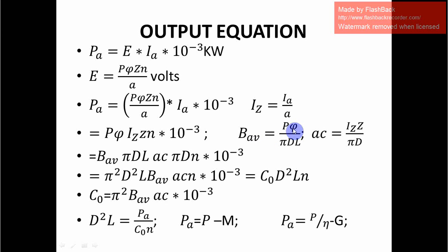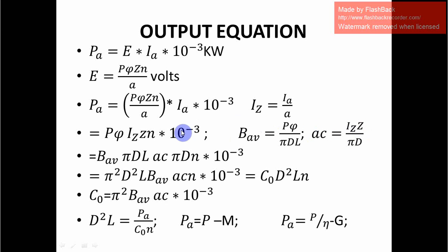From specific electric and magnetic loading: the average magnetic flux density B_av equals the total magnetic loading P·φ divided by π·D·L. Similarly, the specific electric loading AC equals total electric loading I_Z·Z divided by π·D. From these two relationships we can find P·φ as well as I_Z·Z, which we substitute into the previous equation.